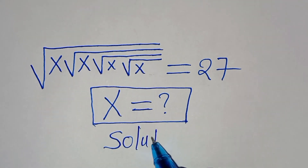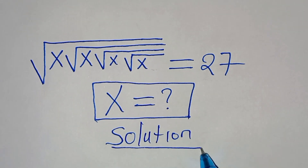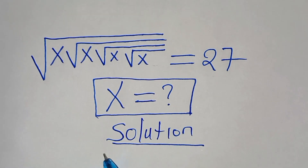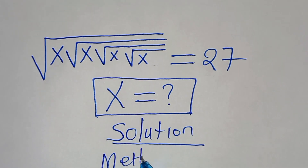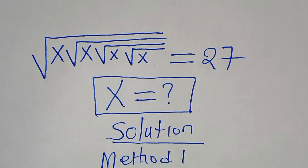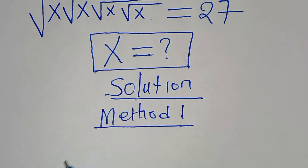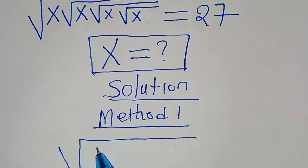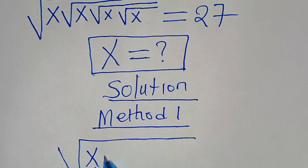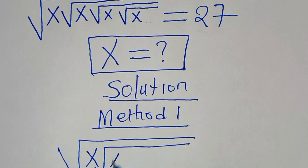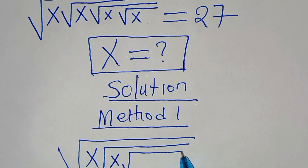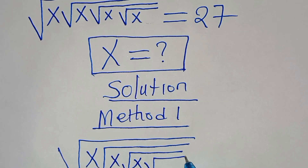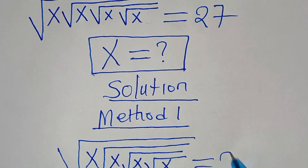We are going to solve this problem by applying two methods. Let's start with Method 1. We have the square root of x, multiplied by the square root of x, multiplied by the square root of x, multiplied by the square root of x, and this is equal to 27.